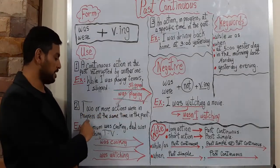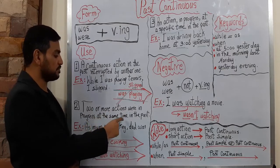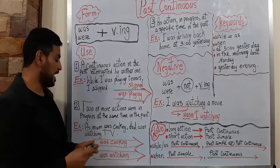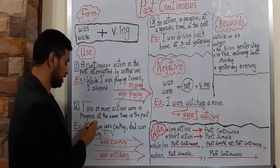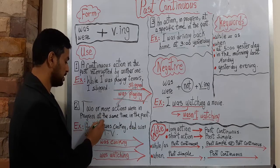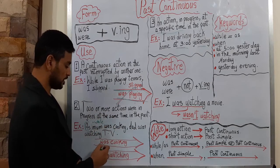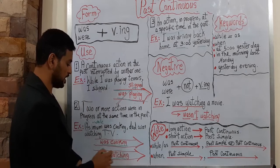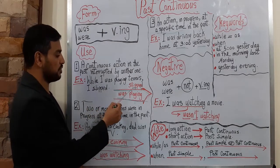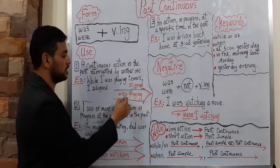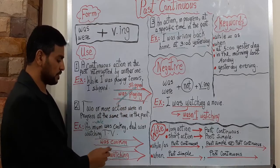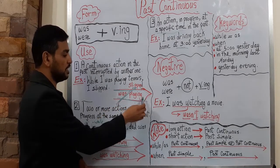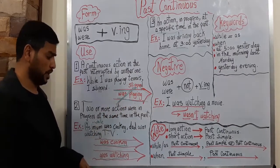Two or more actions were happening, or were in progress, at the same time in the past. As mom was cooking, dad was watching. 'As' is the same as 'while.' Mom was cooking — this is the long action — and it was not interrupted by 'was watching.' Unlike the first example, where 'was playing' was interrupted by 'slept.' So here, none of them interrupted the other; both of them were long actions.